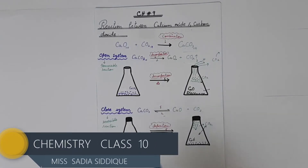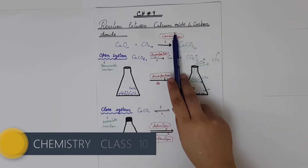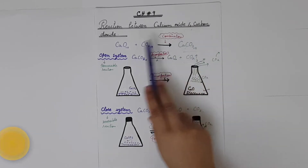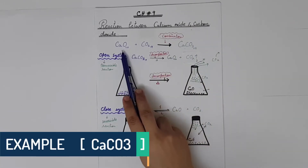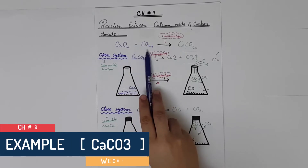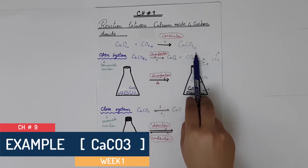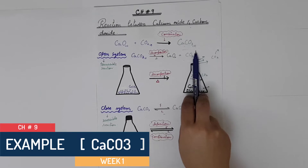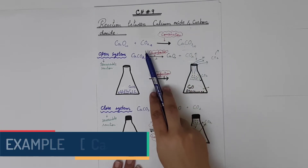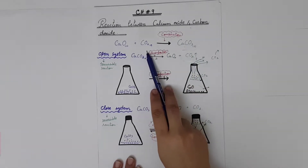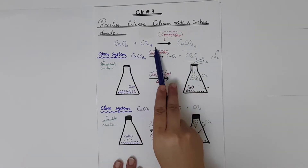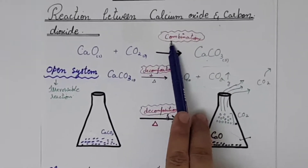Now let's have a look at another example: the reaction between calcium oxide and carbon dioxide. We have two reactants, calcium oxide and carbon dioxide, which are combined to form calcium carbonate, which is in solid state. We had two reactants — one solid and one gas — and it follows a combination reaction.